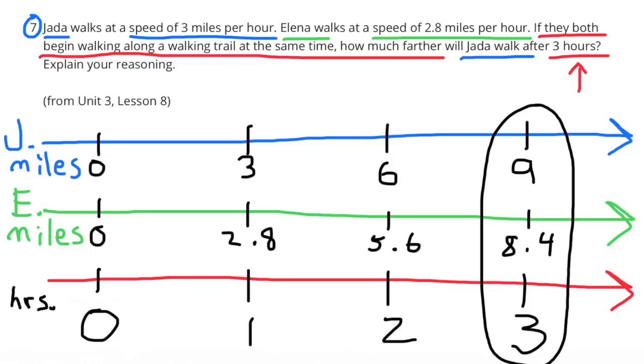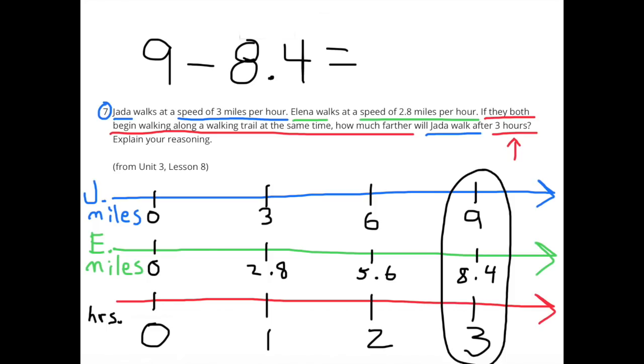After three hours, Jada walked nine miles, and Elena walked eight-and-four-tenths miles. Nine miles minus eight-and-four-tenths miles equals six-tenths of a mile. After three hours, Jada walked six-tenths of a mile further than Elena.